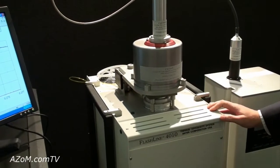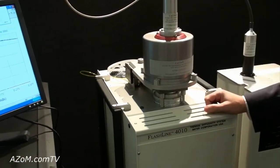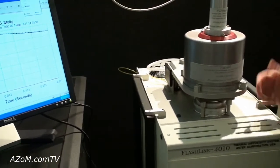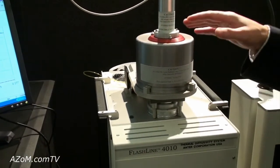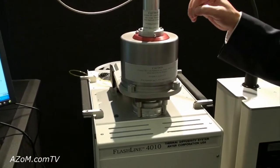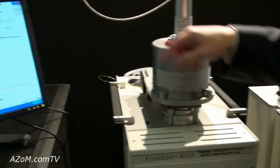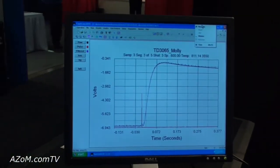By that time, you would already have your parameters input into the computer and the test would be ready to run. Now once it gets to temp, it would flash that sample. The thermogram over here shows a typical result of an unknown.